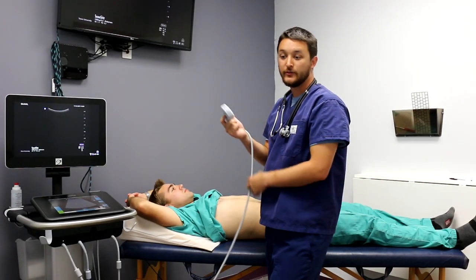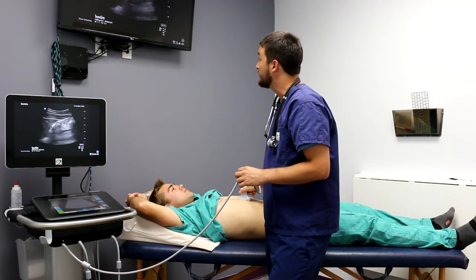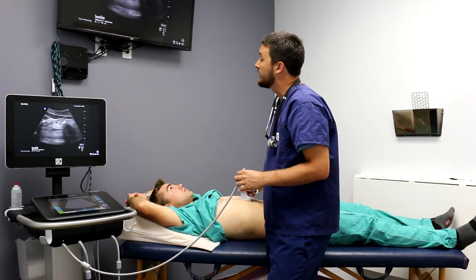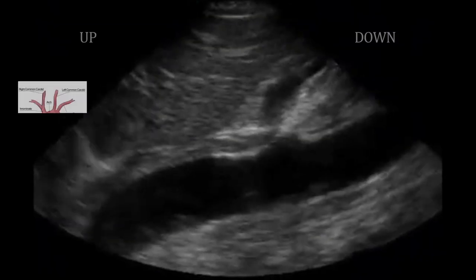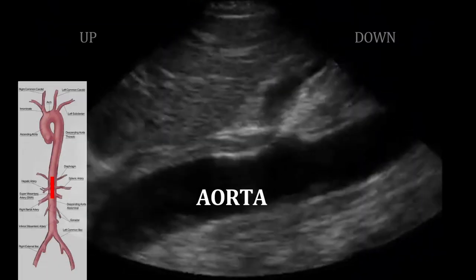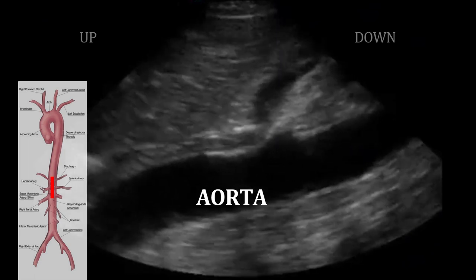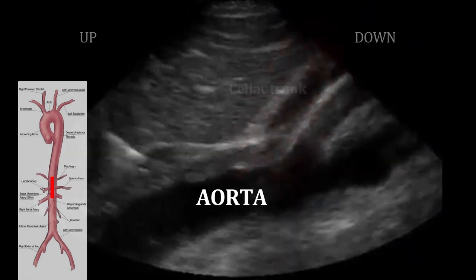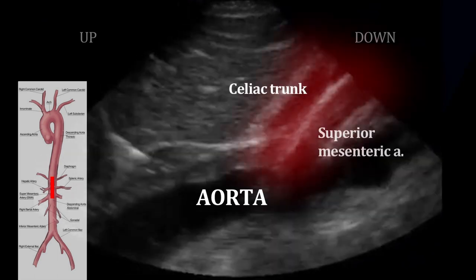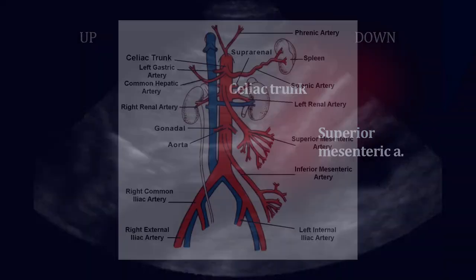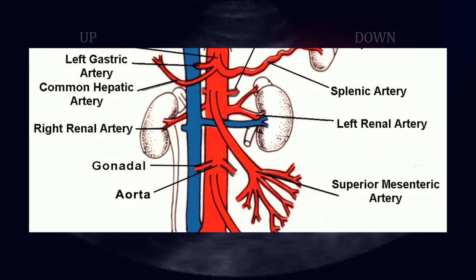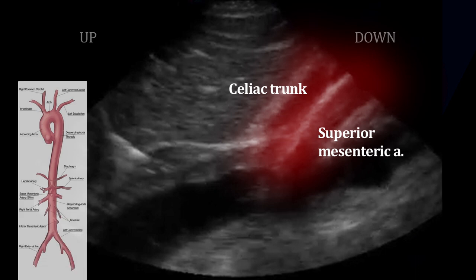Once we've completed the short axis view, we want to make sure we get a long axis view as well. It's a very similar approach — we begin at the epigastrium and move inferiorly down to where the aorta splits. The long axis view allows us to visualize the celiac trunk and superior mesenteric artery. The SMA is very close to the renal vasculature, with the left renal vein actually passing just behind it. This is an important landmark because most AAAs are actually infrarenal, or below the renal arteries.